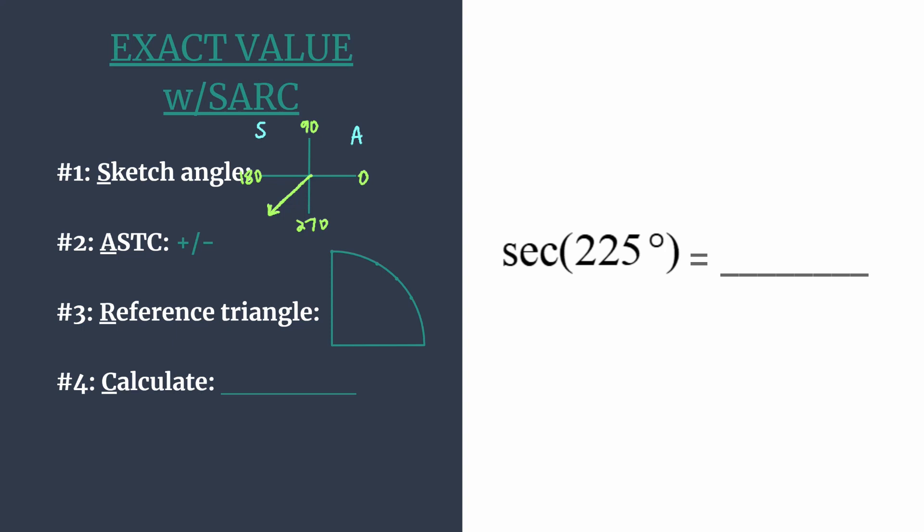Sine and its reciprocal cosecant in the second. Tangent and its reciprocal cotangent in the third, so that's what we really care about for this exact value. But then cosine and its reciprocal secant are positive in the fourth.